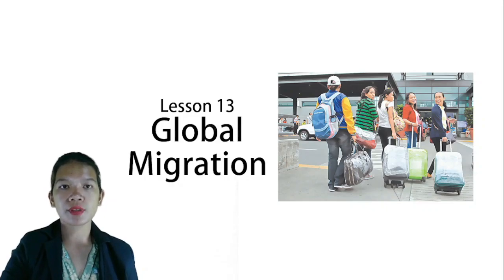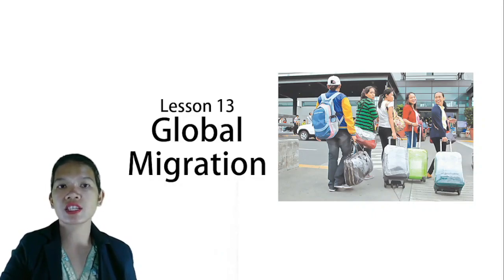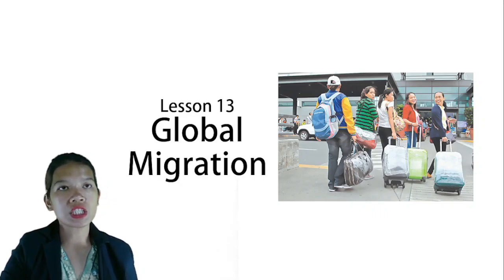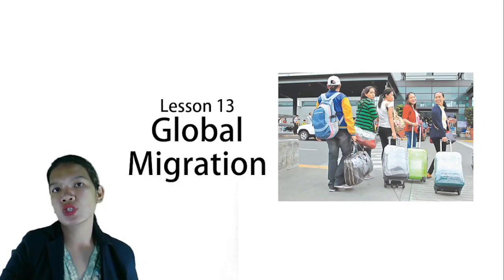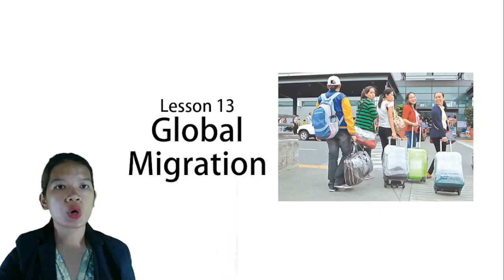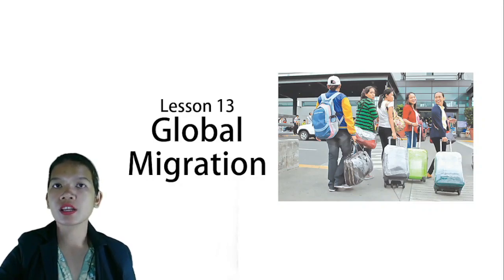We are now in our lesson 13. But before that, let me have a recap of our previous lesson, which is all about global demography. Last time, we were able to understand what is demography — the quantitative study of human population, including the mortality rate, the fertility rate, and aging. We also understood the relationship between population and economic welfare, the effects of aging and overpopulation, and the different positions on reproductive health laws in different countries.